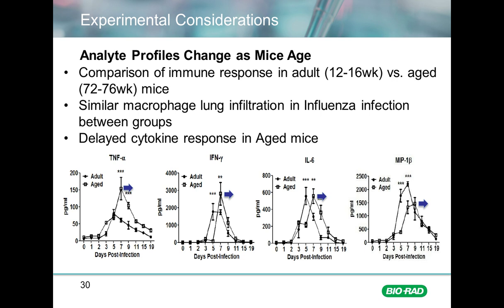The relative amount of phycoerythrin fluorescence allows one to plot a standard curve yielding a relative concentration measurement for each analyte in the sample. When performing an assay like this, it's really important to consider the overall experiment. I have an example here where age was a factor compared in the response to influenza infection in a mouse model. The adult mice are 12 to 16 weeks of age versus the aged mice, which are 72 to 76 weeks of age.